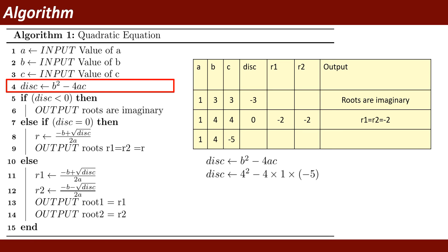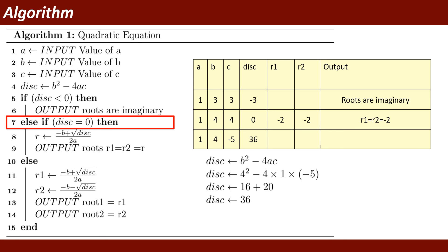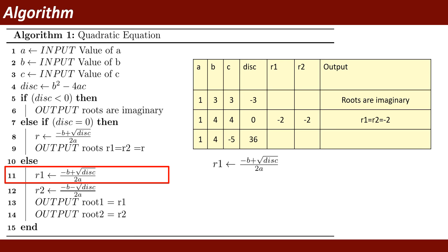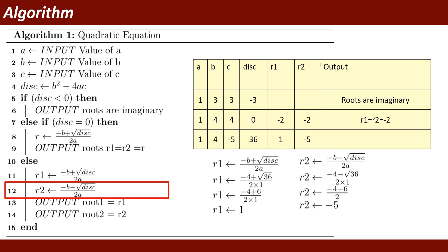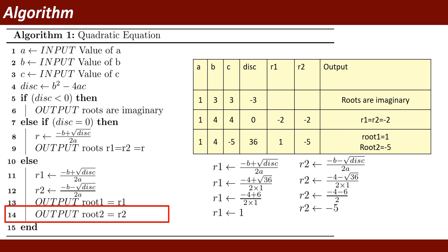Disk = 4 squared minus 4 times 1 times minus 5 = 16 plus 20 = 36. The first condition (disk less than 0) is false, the second condition (disk equal to 0) is also false, so it goes to the else part and calculates both roots. R1 = minus 4 plus square root of 36 divided by 2 times 1 = minus 4 plus 6 divided by 2 = 1. R2 = minus 5. Root 1 and root 2 are displayed, and the program ends.